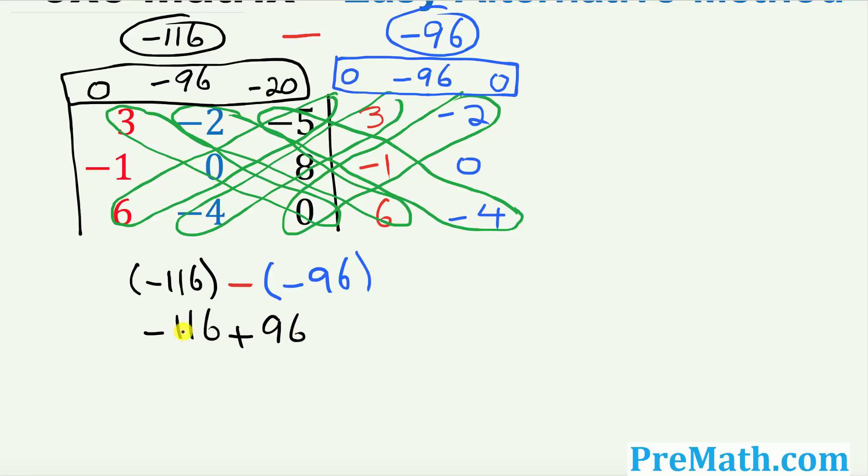When you simplify these are unlike signs, so we're going to subtract and keep the sign of the larger number, which turns out to be negative 20. And that is our answer to this 3 by 3 determinant. Thanks for watching.